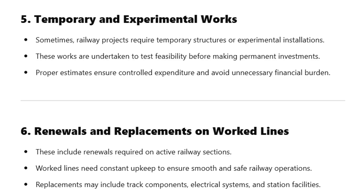Category 6: Renewals and Replacements on Worked Lines. These include renewals required on active railway sections. Worked lines need constant upkeep to ensure smooth and safe railway operations. Replacements may include track components, electrical systems, and station facilities.